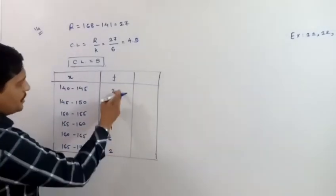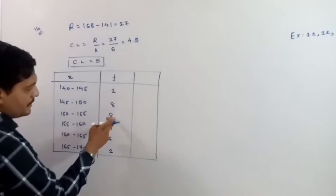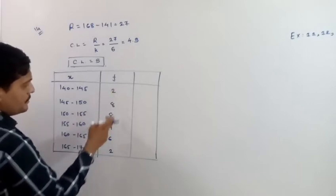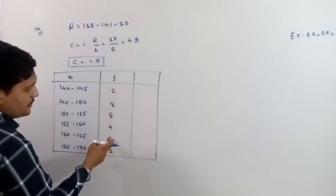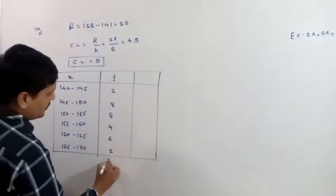The totals work out as: 2, 8, 10, 18, 22, 28 and 30.